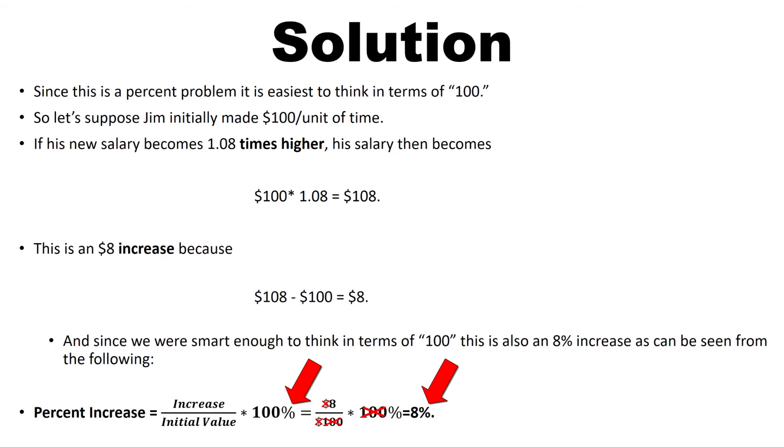This might seem like a small thing, but we actually call this the factor label method, and it shows that sometimes units can behave like mathematical symbols and can cancel, as it does in this case. So if you're very careful with your units, you can have this nice relationship.